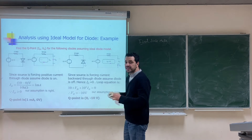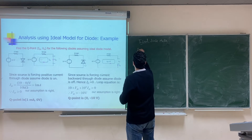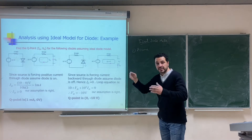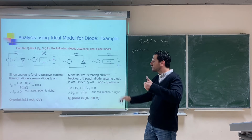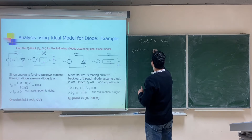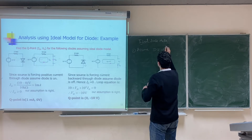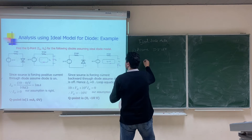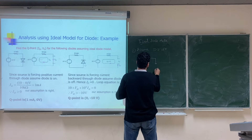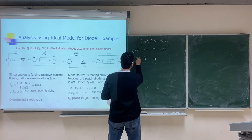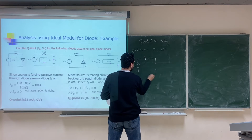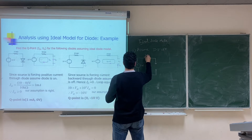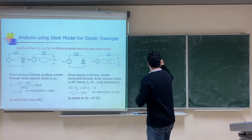The first step as we agreed is: Assume. Write 'assume' — this is how we solve problems in exams, quizzes, and homework. Assume that the diode is off. If the diode is off, it is represented by an open circuit. So the circuit becomes: 10V source, 10kΩ resistor, and an open circuit where the diode was. We label the diode current and diode voltage.